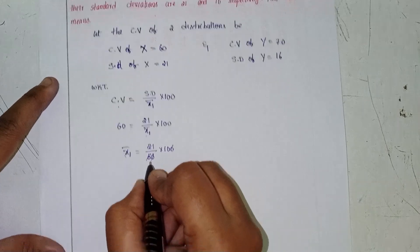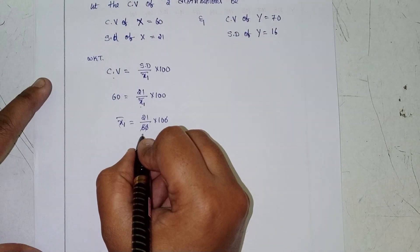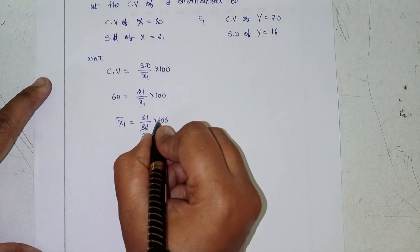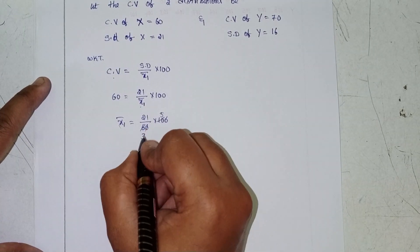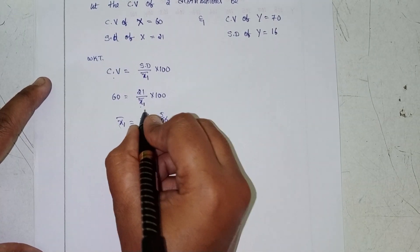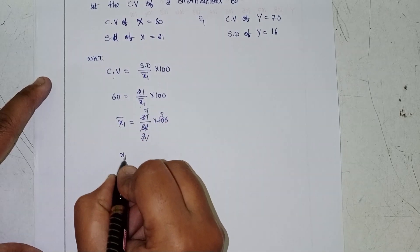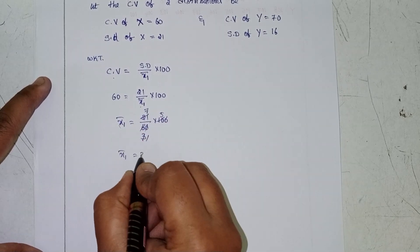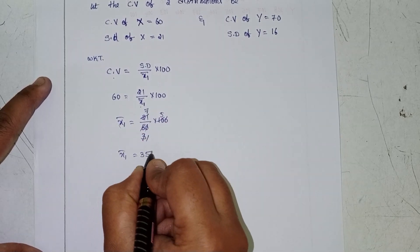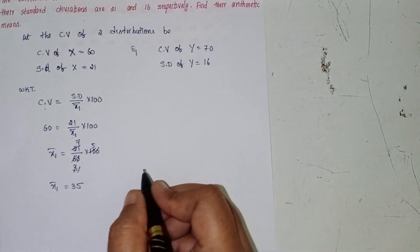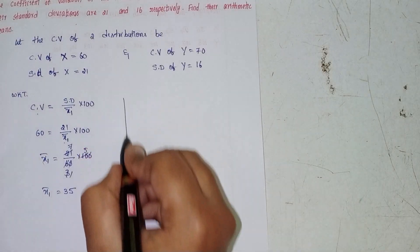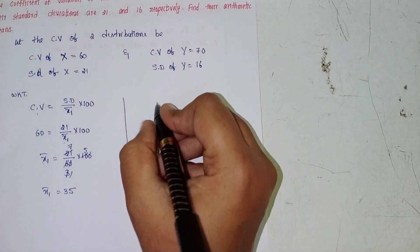Calculating: x̄₁ equals 21 by 60 into 100, the zeros cancel, giving x̄₁ equals 35.